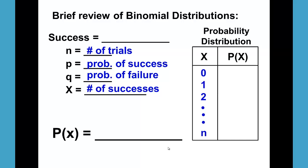And your formula for your probability of x is nCx times p to the x times q to the n minus x.